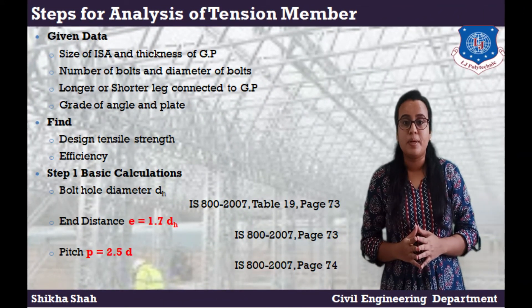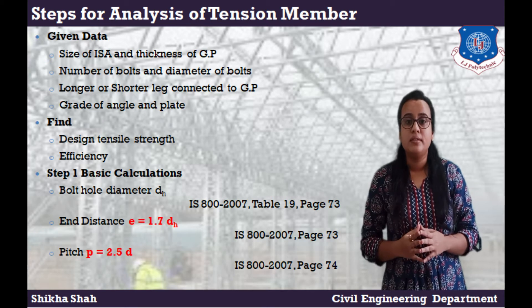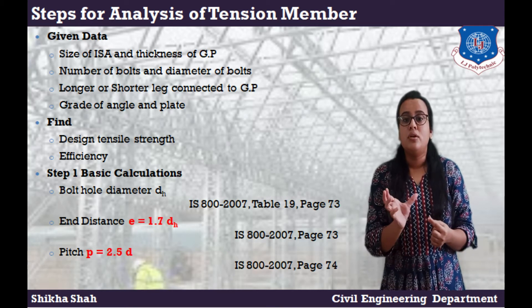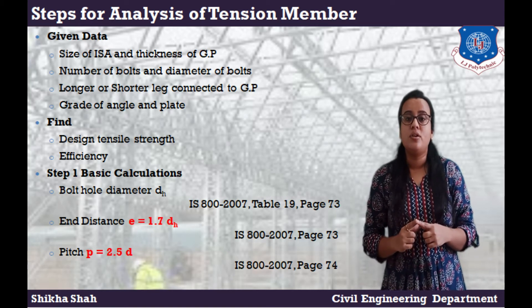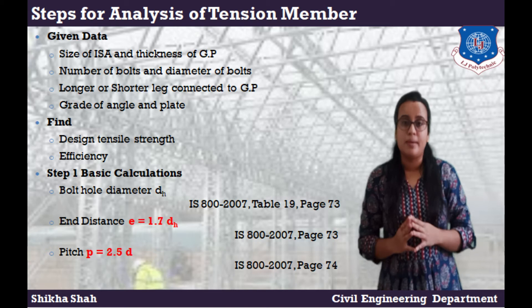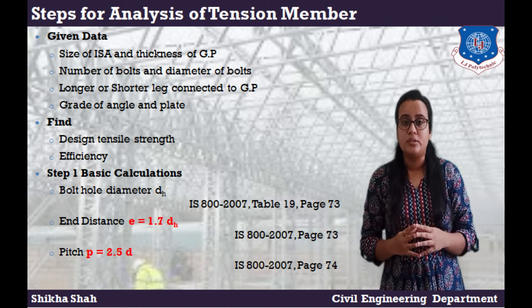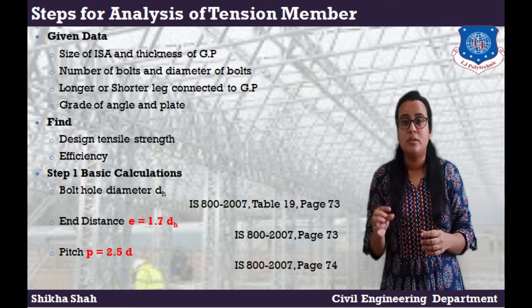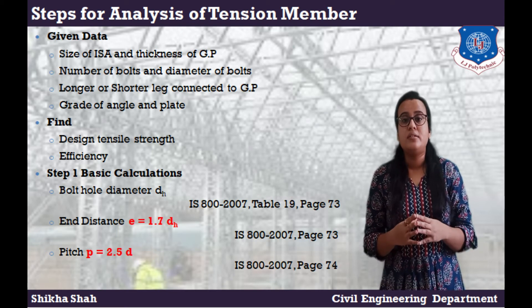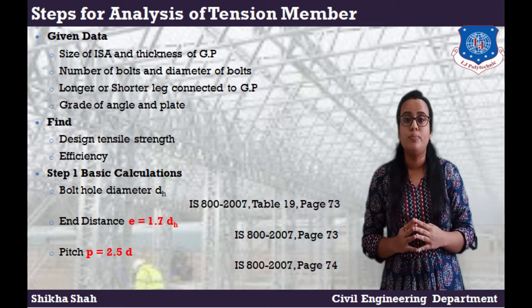Steps for analysis of tension member: in the question, the given data are size of angle and thickness of gusset plate, number and diameter of bolts, longer or shorter leg connected to gusset plate, and grade of angle and plate. We have to find the design tensile strength and, in some examples, the efficiency of the member. Step 1 — Basic calculations: calculate the bolt hole diameter (given on page 73 of IS 800), end distance E = 1.7 × DH, and pitch distance = 2.5 × D.